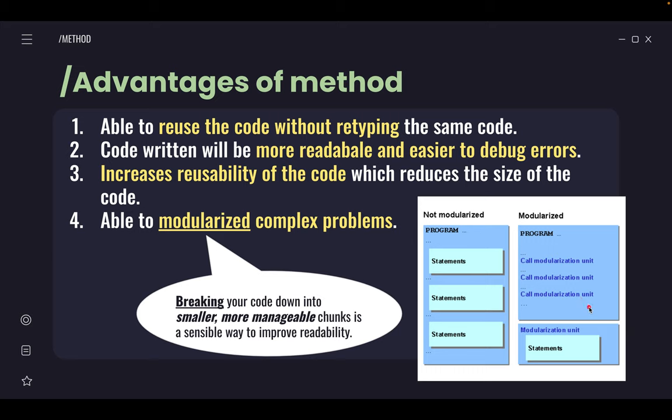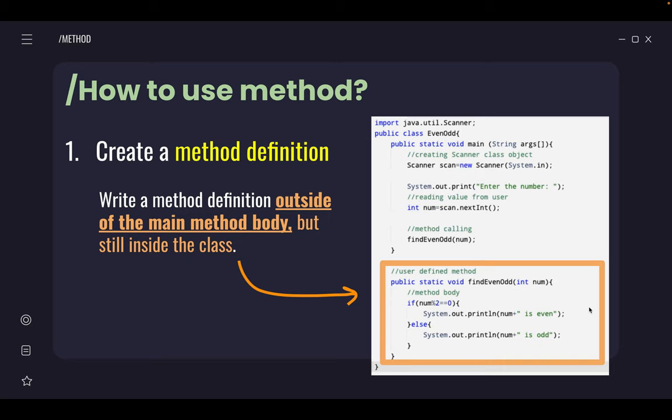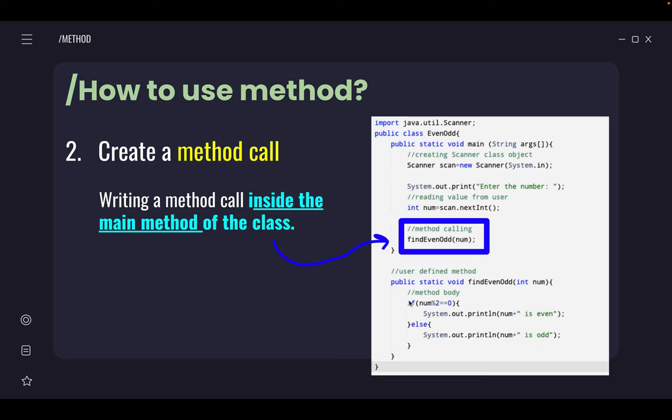So how to use this method? There are two ways. First, you need to create a method, so you need to define a method first. Method definition happens outside of the main method body. You can see here the main method has curly brackets starting here and ending here. So method definition occurs outside the main method but still inside the class, meaning it's still in the same class but outside the main method because we're creating a new method. This is called method definition.